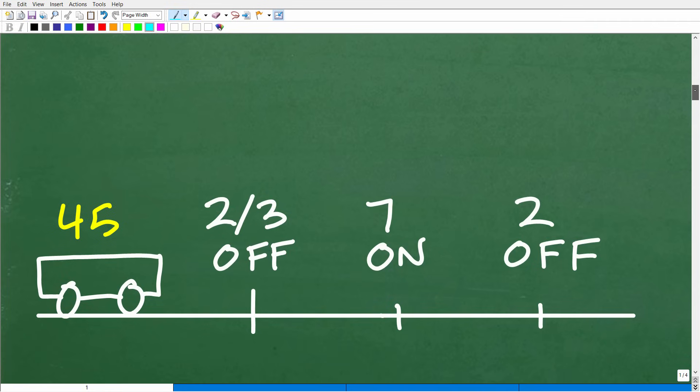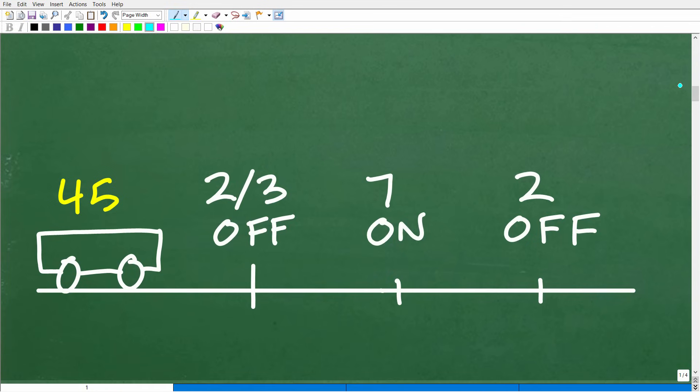So let's go ahead and take a look at my model. Now, this is only one way to kind of see what's going on. But I think this is a logical approach. So here is our bus. And we have 45 people, right? So currently on the bus. Now, what's going to happen? Well, two-thirds of these people are going to get off. All right. So that's event one.